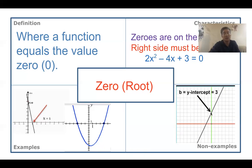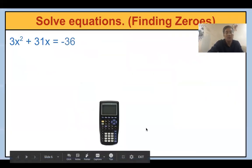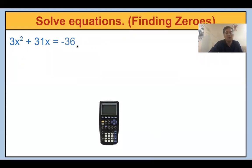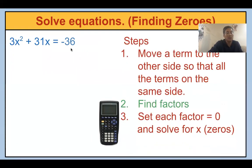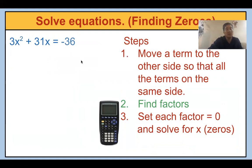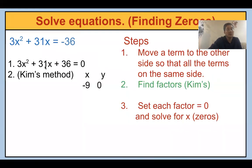Now with an example, let's try to find the zeros. Your example is 3x squared plus 31x equals negative 36. The first step is to move negative 36 to the other side — the left side — so that all terms are on the same side and the other side equals zero. If you move negative 36 to the other side, you get 3x squared plus 31x plus 36 equal to zero.